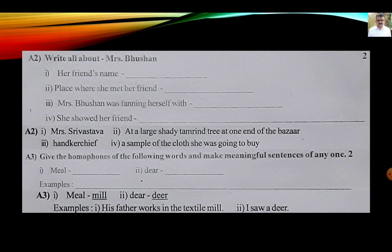Activity A2: write all about Mrs. Bhushan. Her friend's name — answer: Mrs. Srivastava. The place where she met her friend — at a large shady tamarind tree at one end of the bazaar. Mrs. Bhushan was fanning herself with a handkerchief. She showed her friend a sample of the clothes she was going to buy.